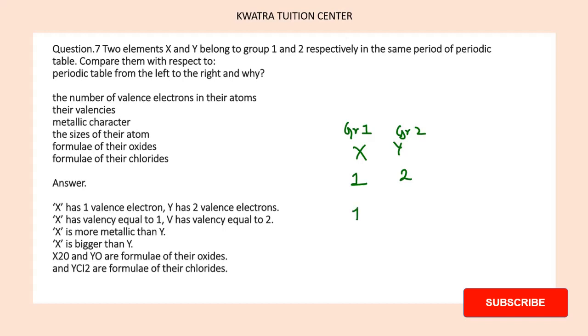...will be 1 only, and valency of the second one will be 2 only. Metallic character: so yes, X is more metallic than Y because from left to right, on the left, metallic nature is higher.